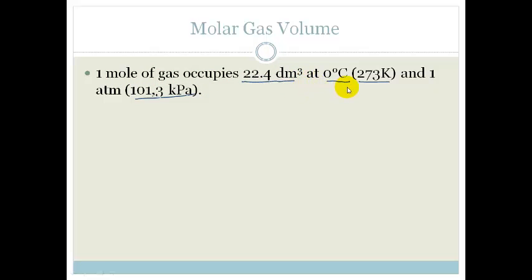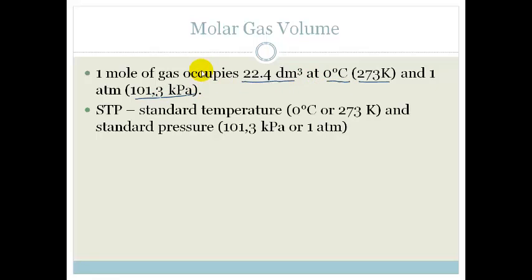So one mole of gas occupies 22.4 decimeters cubed at a specific temperature and pressure. And these specific temperatures and pressures are called standard temperature and pressure, STP. So the standard temperature is 0 degrees Celsius, or 273 Kelvin if you're using the Kelvin scale, or it's 101.3 kilopascals, or one atmosphere. Please understand that the reason this is only at STP is because obviously we know that a gas, what does it do if it gets hot? It expands.